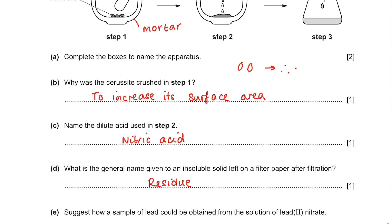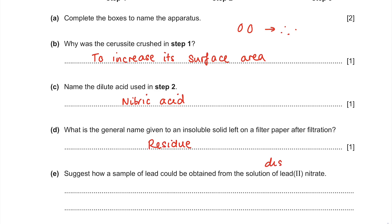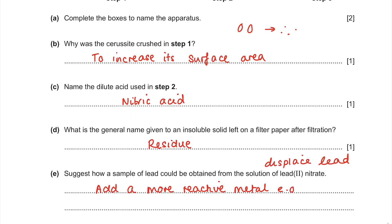Suggest how a sample of lead could be obtained from the solution of lead 2 nitrate. We need to displace the lead by using a more reactive metal — make sure you name one. Make sure you've learned your reactivity series off by heart. Pick a sensible one that isn't too reactive and therefore too dangerous, so something like magnesium would work well here, which displaces the lead. Make sure you're hitting the two marks — you need to make two separate points, don't just repeat the same one.